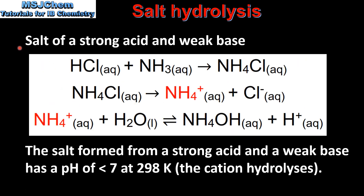Finally, we look at the salt of a strong acid and a weak base. The salt ammonium chloride is formed in the reaction of a strong acid, hydrochloric acid, with a weak base, ammonia. The ammonium chloride dissociates to give the ammonium ion and the chloride ion. The ammonium ion hydrolyzes the water molecule to produce the hydronium ion. So the salt formed from a strong acid and a weak base has a pH of less than 7 at 298 K, because the cation hydrolyzes.